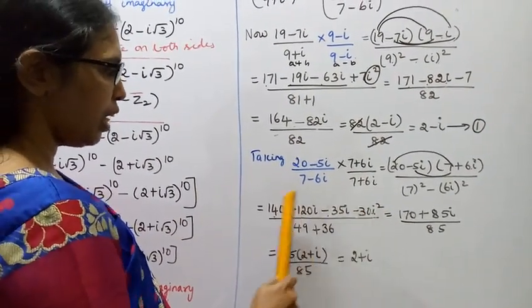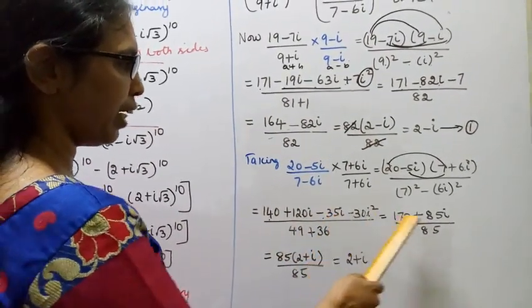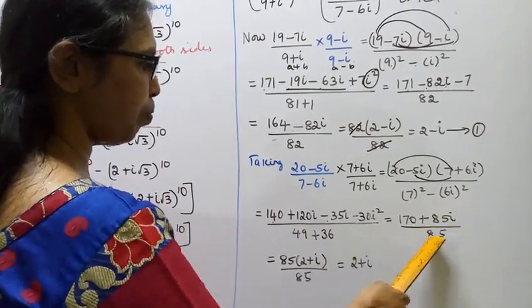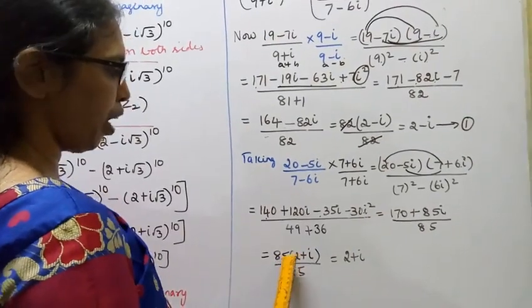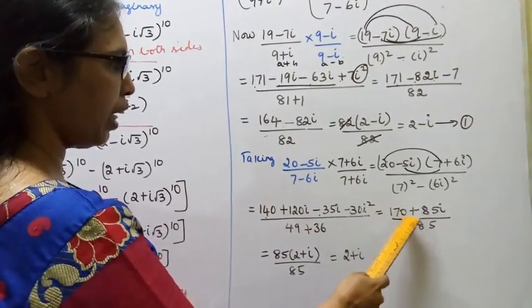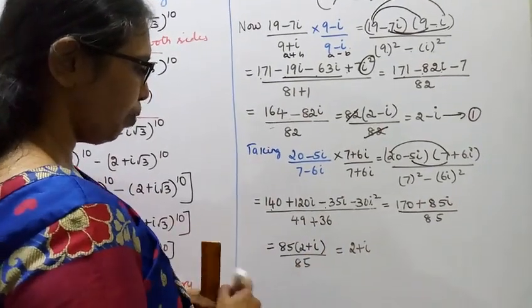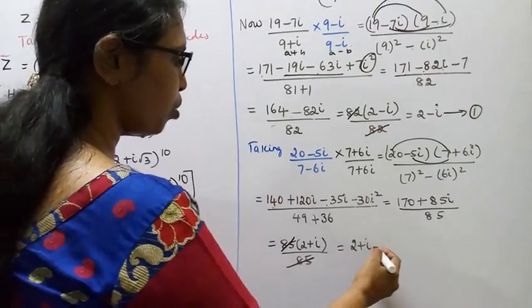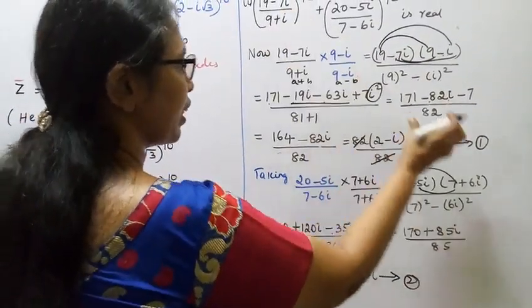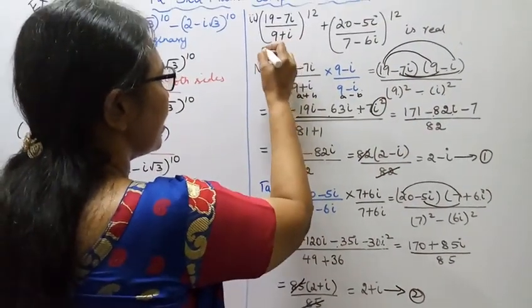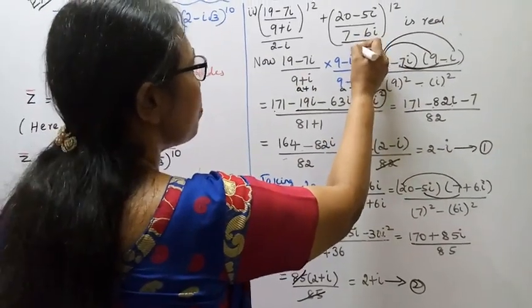So numerator = 140 + 30 + (120i − 35i) = 170 + 85i. Dividing by 85: (170 + 85i) / 85 = 2 + i. So (20 − 5i) / (7 − 6i) = 2 + i.